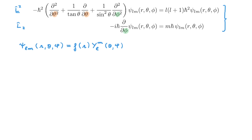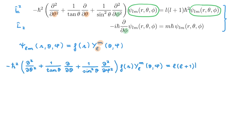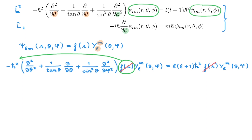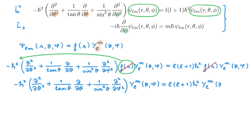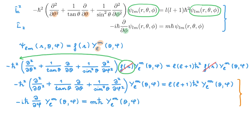The part that only depends on the angular variables is conventionally written with a capital Y, with the label l as a subindex and the label m as a superindex. Plugging this trial solution into the L squared equation and simplifying, since the differential operators don't affect the r-dependent part, we can move it before the operator and it cancels with the corresponding part on the right-hand side. This means we can rewrite the eigenvalue equation for L squared in terms of Y_lm alone, and following the same procedure with the Lz equation, we find a second equation for Y_lm.